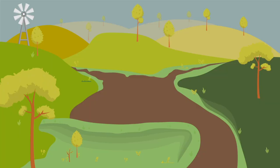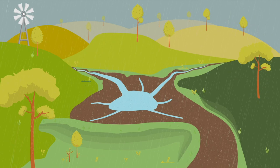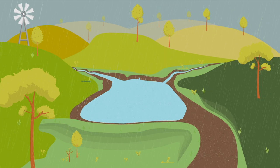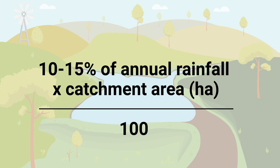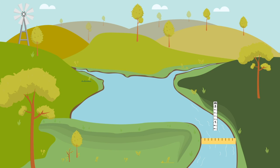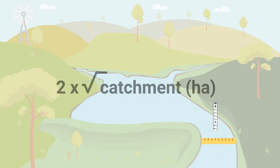Dams can be used to control gully head erosion by drowning them out; however, when constructing a dam it's important that an adequate bywash is constructed at the same time. It is a good idea to match the capacity of the dam to the catchment size — a rule of thumb is that the capacity should be about 10 to 15 percent of the annual rainfall times the catchment area in hectares. The bywash is a crucial part of dam construction and should be wide enough so that flows are shallow and slow to prevent erosion. The bywash width should be two times the square root of the catchment area in hectares.